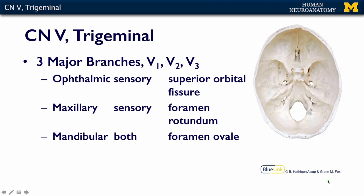The trigeminal nerve is called the trigeminal nerve — tri meaning three — because it has three major branches. It has an ophthalmic, a maxillary, and a mandibular branch.